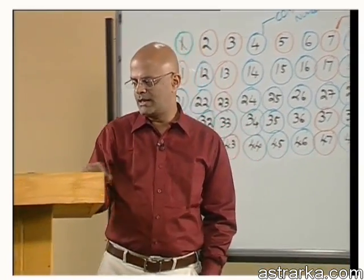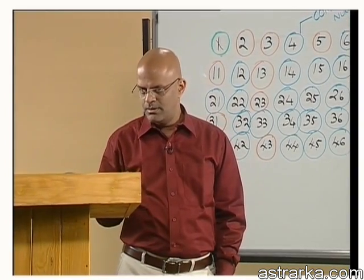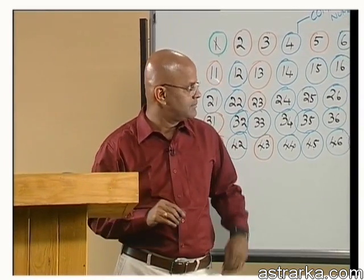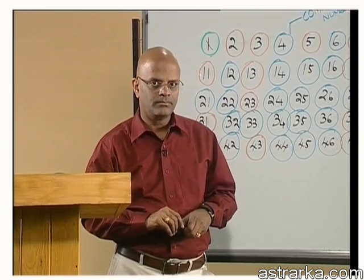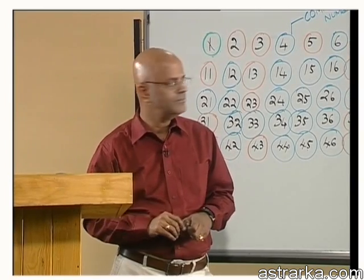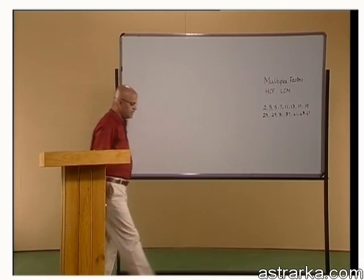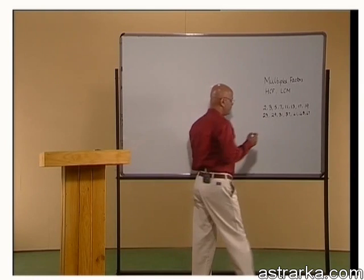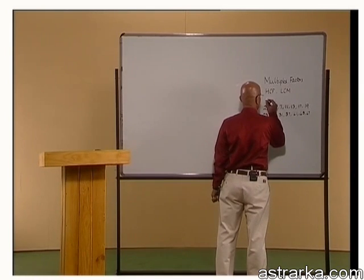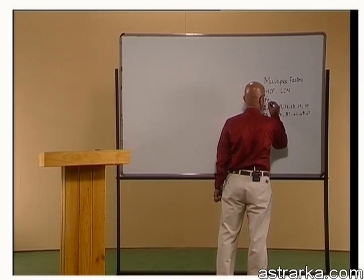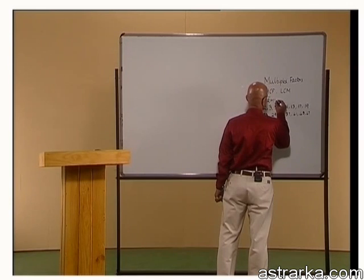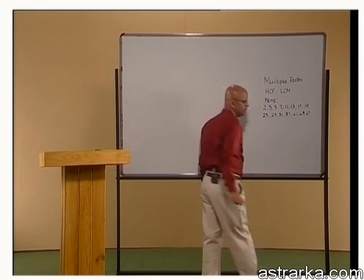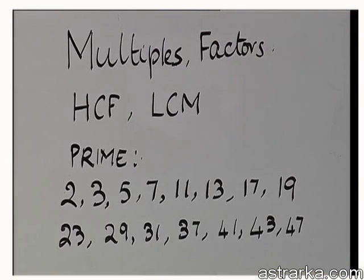That is exactly where we are going to stop and start the next section. Now, we just saw that these numbers are prime numbers between 1 and 50. I just wanted to make a note of it and park it to that side so we can use it whenever we want.